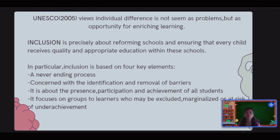Inclusion is precisely about reforming schools and ensuring that every child receives quality and appropriate education within the schools. In particular, inclusion is based on four key elements: a never-ending process; concerned with the identification and removal of barriers; about the presence, participation, and achievement of all students; and it focuses on groups of learners who may be excluded, marginalized, or at risk of underachievement. Each individual or student is unique in their own ways and has the right to learn in a regular classroom setting. It is the duty of teachers to accept them and treat them equally amongst their peers. Inclusion helps create an enriched learning environment where diversified and differentiated teaching strategies, with the use of modification and accommodation, benefit all students.